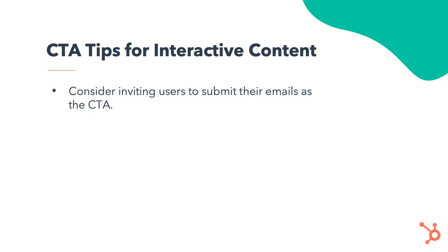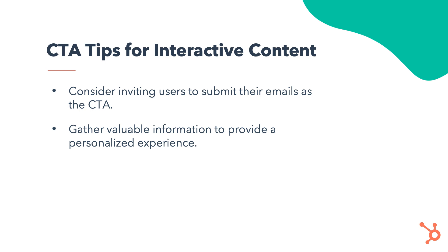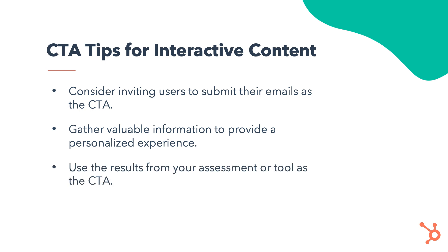Here are additional ways to create impactful CTAs for interactive content. Consider inviting users to submit their emails — interactive content is often perceived to provide high-value information, so users are likely to provide their emails when requested. Gather valuable information to provide a personalized experience: you can gather insights in quizzes and use that to provide a tailored CTA at the end. Finally, use the results from your assessment or tool as a CTA — for example, if an assessment determines why your plant isn't growing, the results might suggest you need different fertilizer, and the CTA could be to download a comparison guide or purchase a fertilizer.